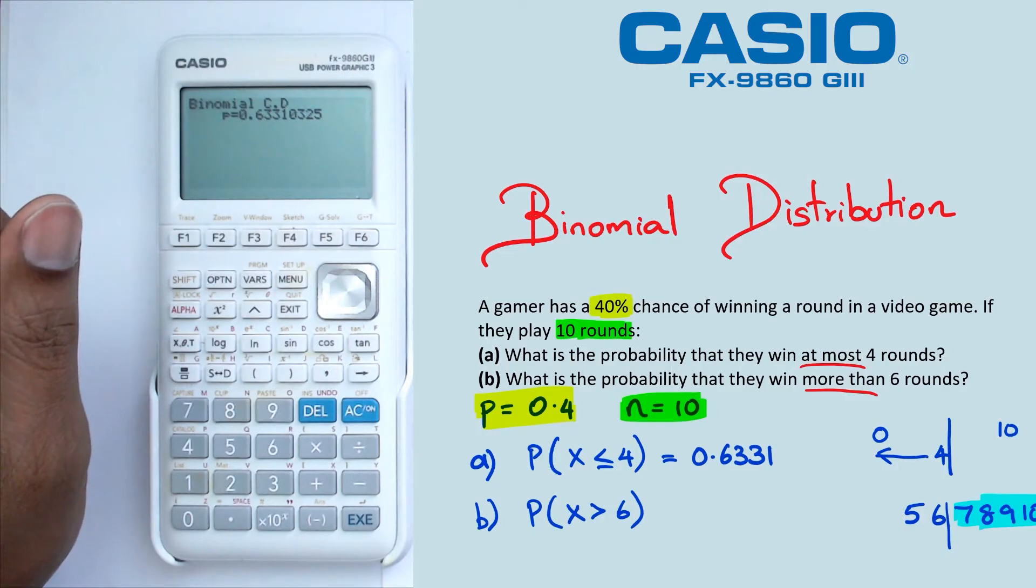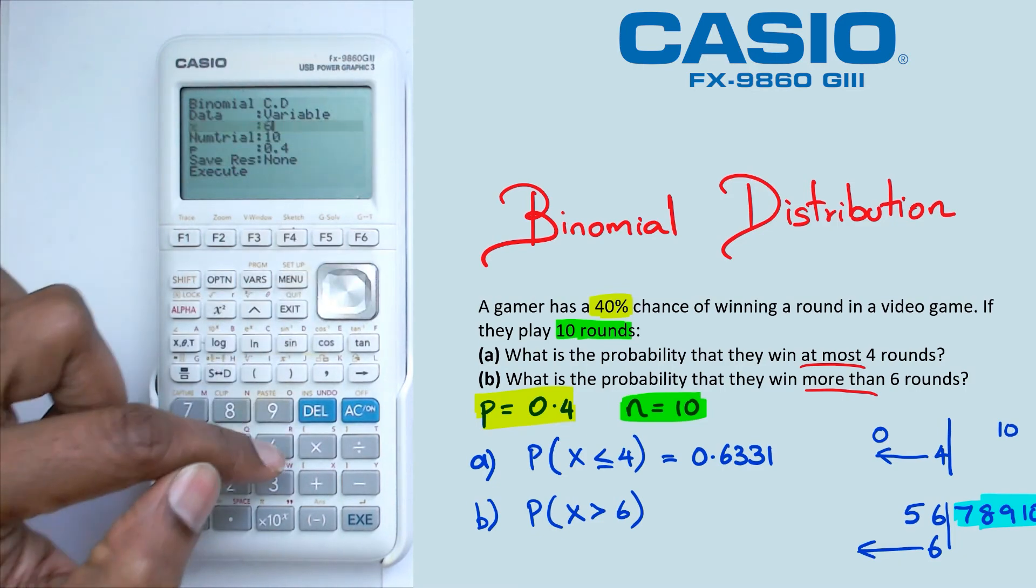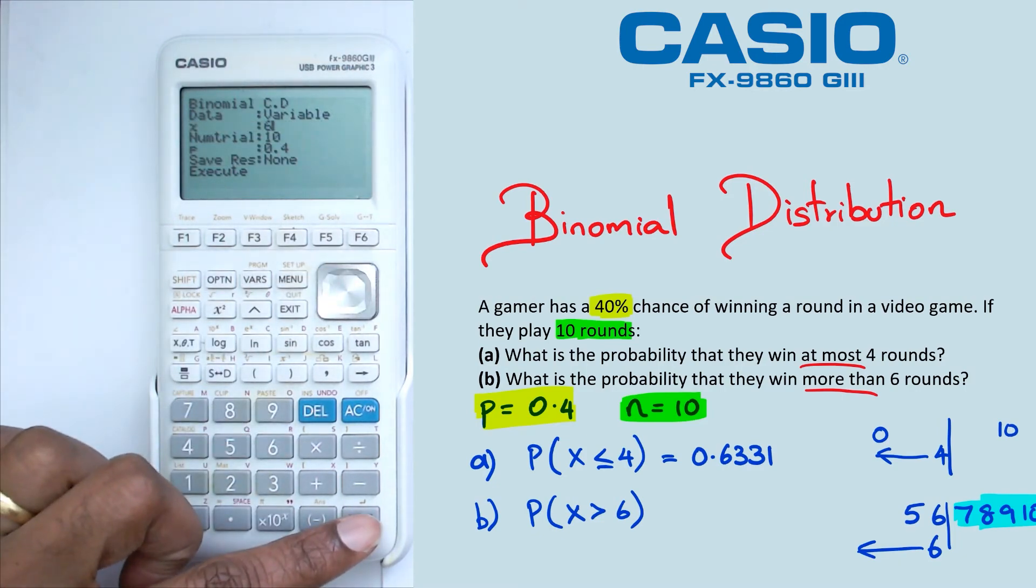So then if we figure out the probability of less than or equal to six, and then we do one minus that, we should be able to get seven, eight, nine, 10. So we're going to go into the calculator, and we're going to work out what the probability of at most six is.